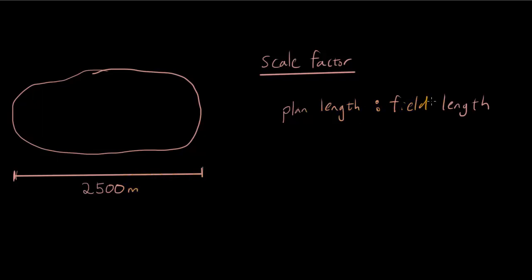So I have field length is the real life length of the object. Field length is just another word for real life length. And you can see in this diagram, the real life length is 2500 meters. And you have the colon symbol in the middle. So what is the plan length?